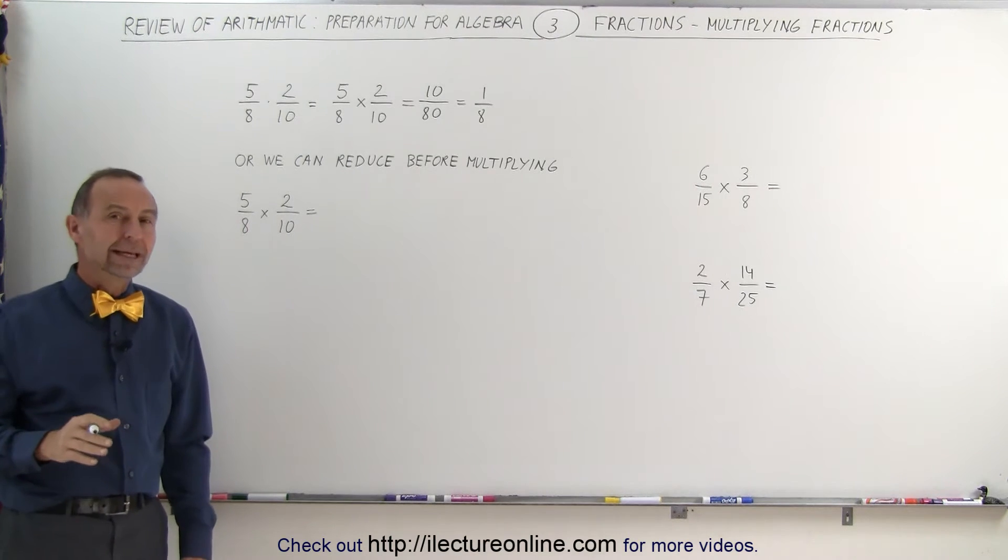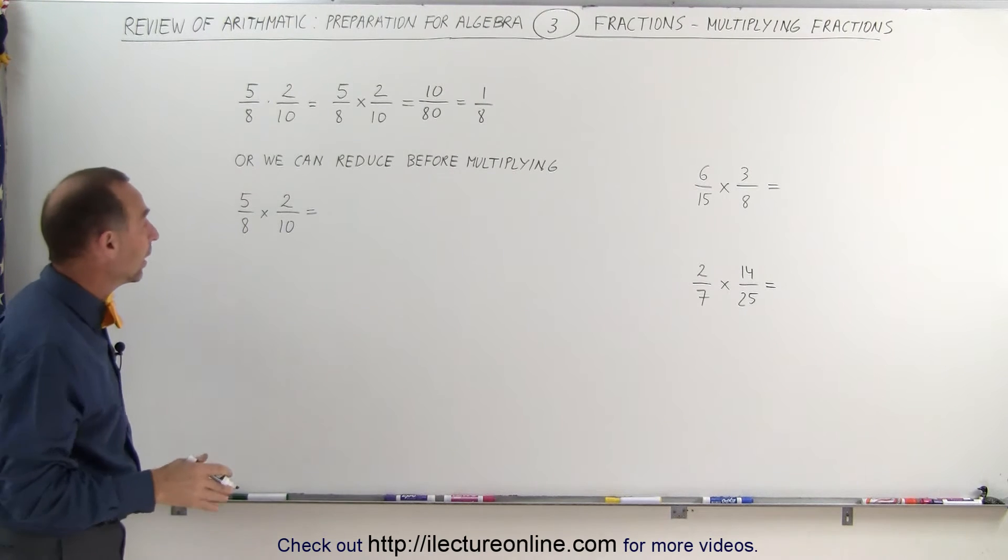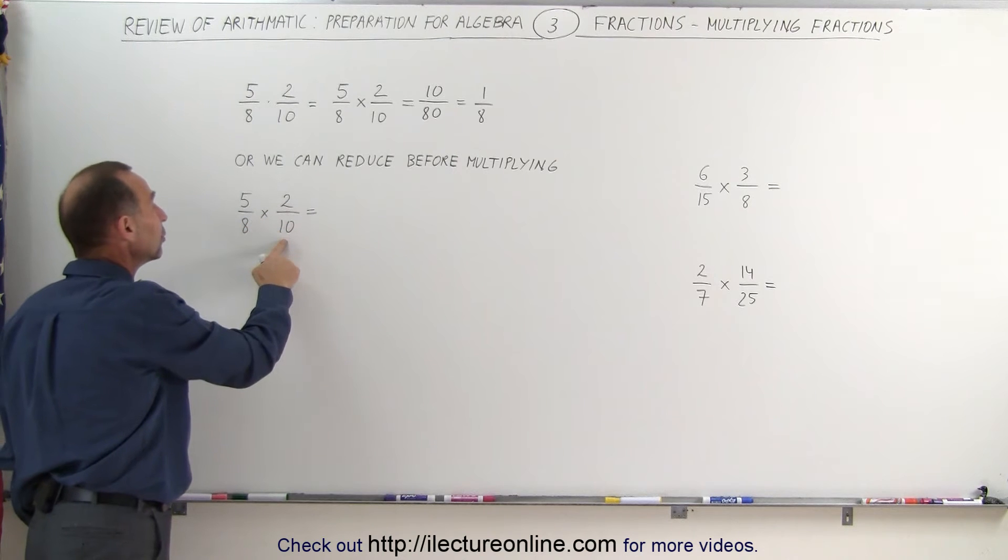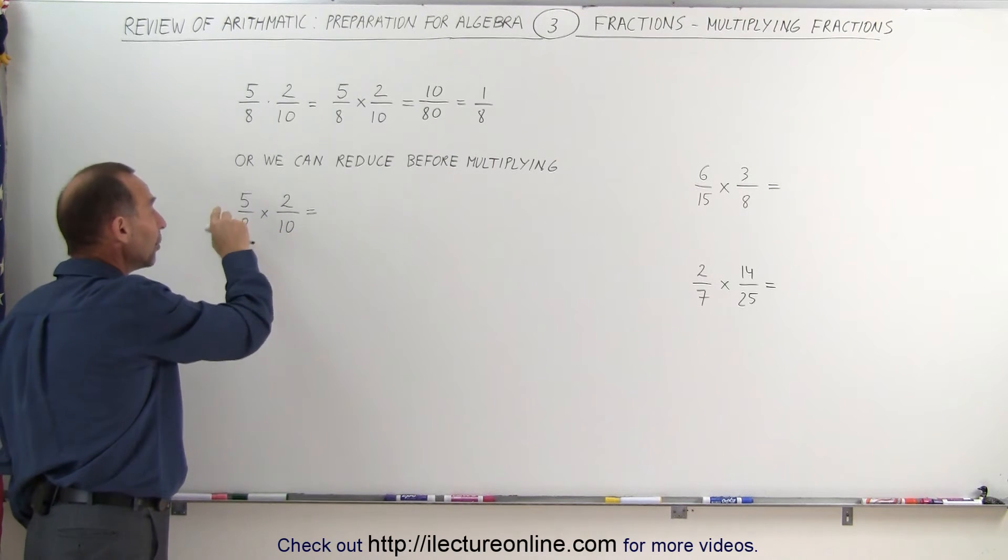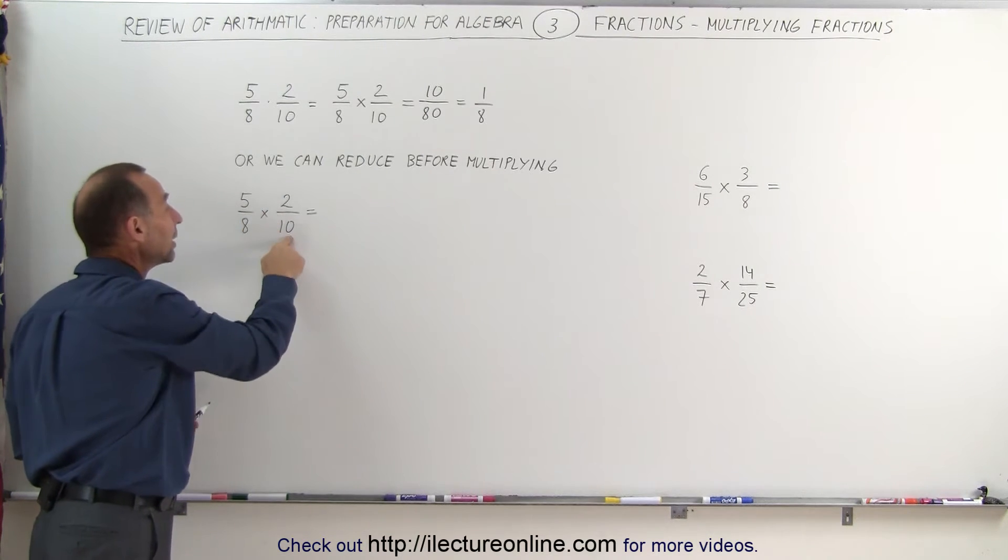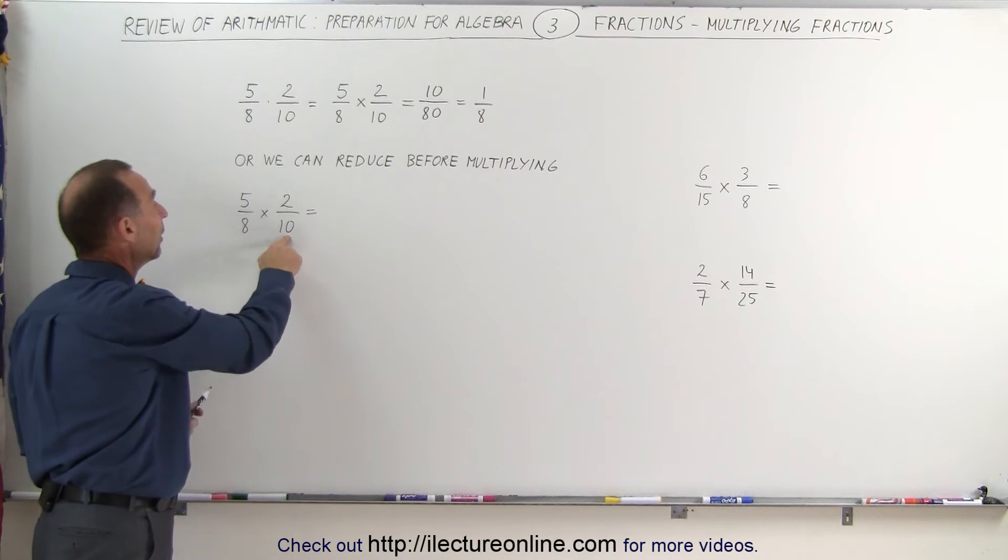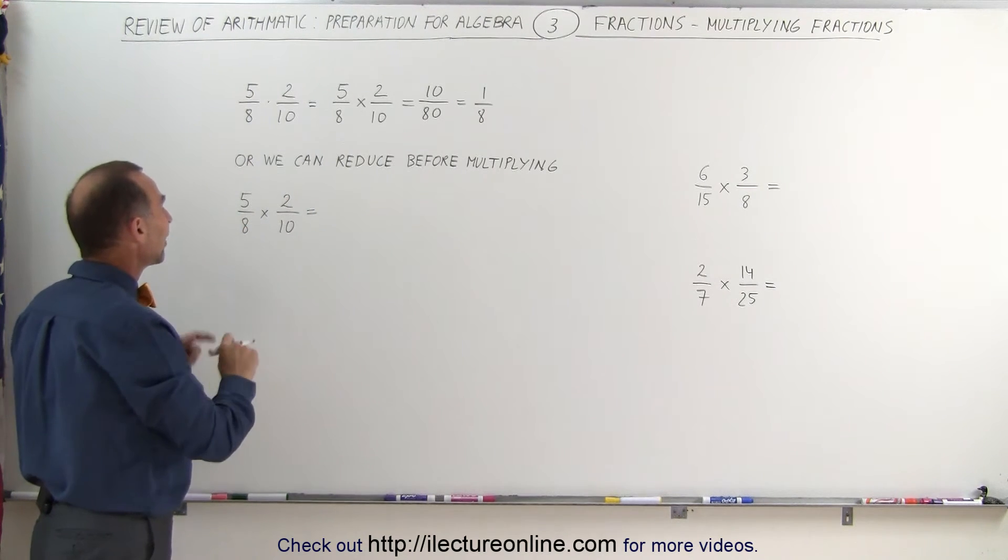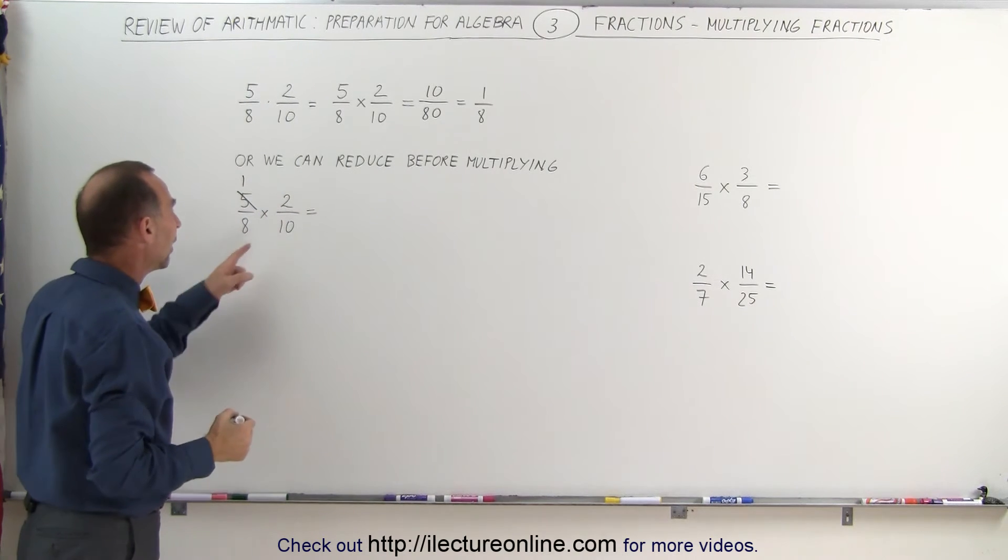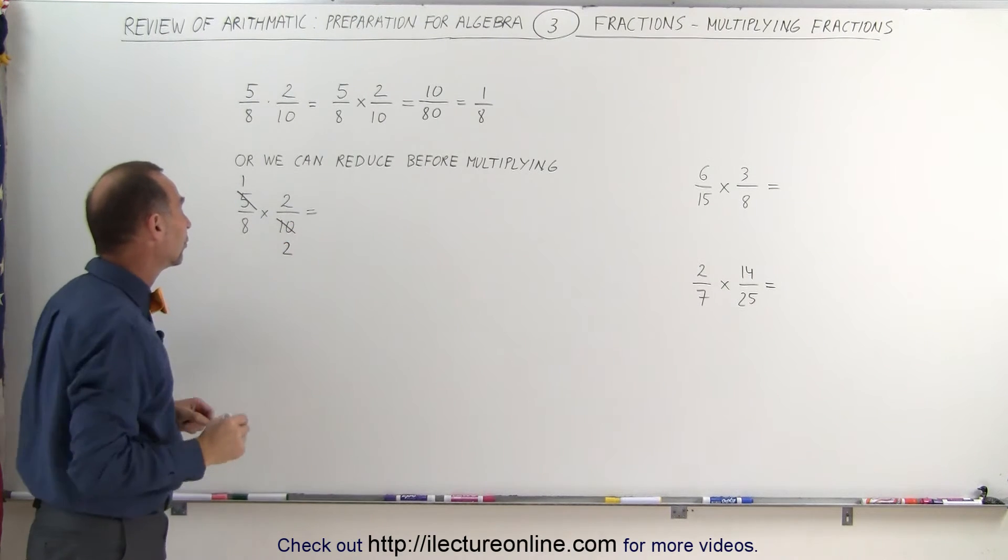What's more preferable is that you can reduce the fraction before you start multiplying. For example, 5/8 cannot be reduced but 2/10 can be reduced. And also when you're multiplying two fractions together, you can actually reduce the numerator of one fraction with the denominator of the other fraction. For example, we can reduce 5 and 10, and we can reduce 2 and 8. 5 divided by 5 is equal to 1, so we cross out the 5 and put a 1 there. 10 divided by 5 is equal to 2, so 10 divided by 5 we write 2.